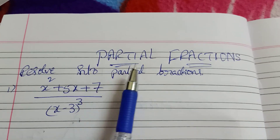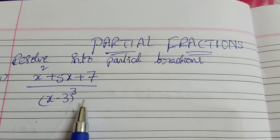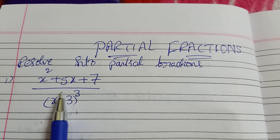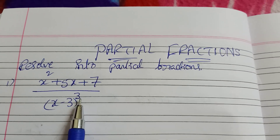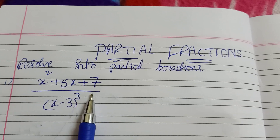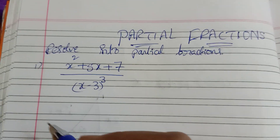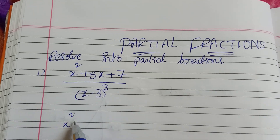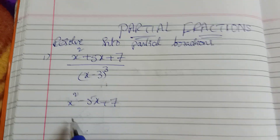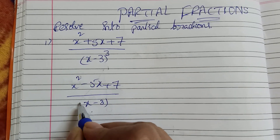Resolve into Partial Fractions. Here is the question. The power is a cube — cube or square is one term, the power cube is one term. The problem is: x squared minus 5x plus 7, divided by (x minus 3) whole cube.